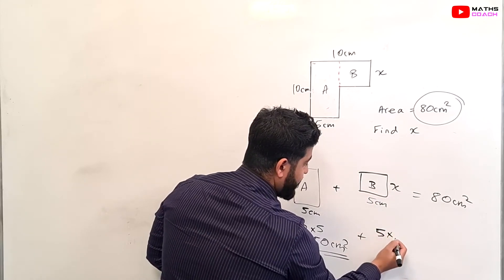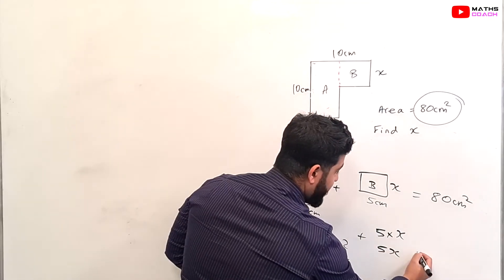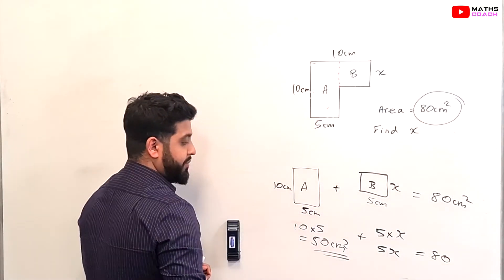And this one would be 5 times X. We don't know what that is yet so we can just write 5 times X which is 5X and we know that this is equal to 80, 80 centimeters squared.